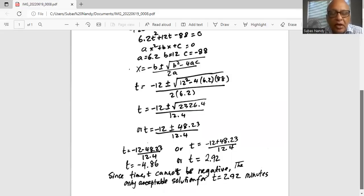Since time t cannot be negative, the only acceptable solution for t is 2.92 minutes. So the negative value for t is not accepted. The actual accepted value of t is 2.92 minutes. That is after 2.92 minutes from the start of the car, the radiator's temperature will reach 120 Fahrenheit. So I'll stop here today.